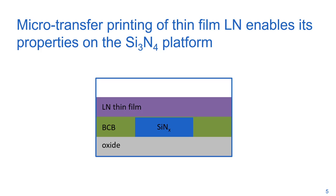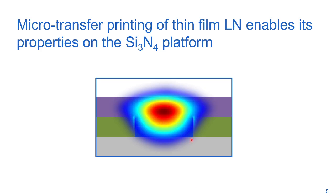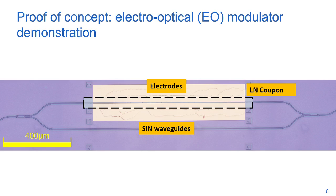Micro-transfer printing of thin films of lithium niobate enables its properties on the silicon nitride platform through hybrid waveguides where light is guided by silicon nitride while a large portion is situated in the lithium niobate film. We at Ghent University have developed a transfer printing process and demonstrate a proof of concept electro-optic modulator which performs close to expected values from simulations.